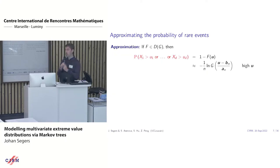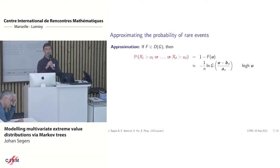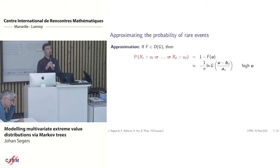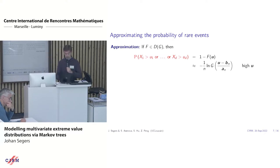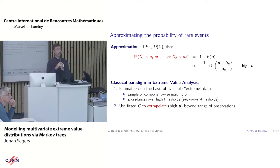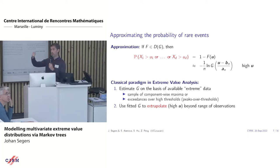Why is this assumption useful for answering the problem set out at the beginning? The idea is that tails of X can be approximated by tails of G. So even though we started with component-wise maxima over large samples, even the multivariate tail of a single observation can be approximated by the tail of the multivariate extreme value distribution. The probability of interest — that there is at least one exceedance in one of the coordinates — can then be approximated by taking the logarithm of the extreme value distribution. You estimate G based on available extreme data and then use that fitted G to extrapolate beyond what you have seen so far.